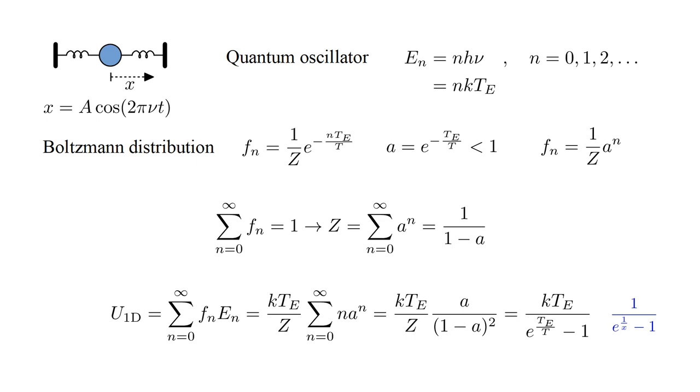If we set k T_E equal to one and call T over T_E, x, this has the functional form one over e to the one over x minus one, with x proportional to temperature.